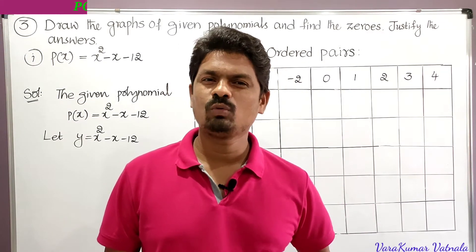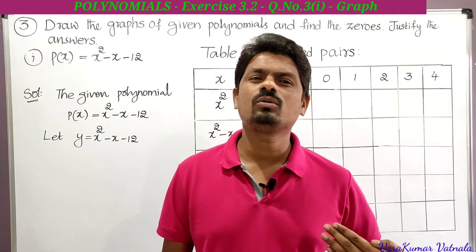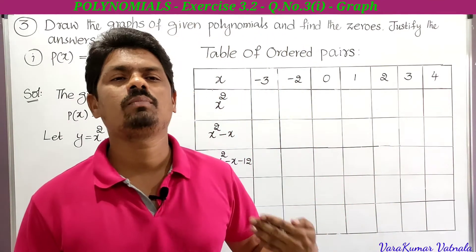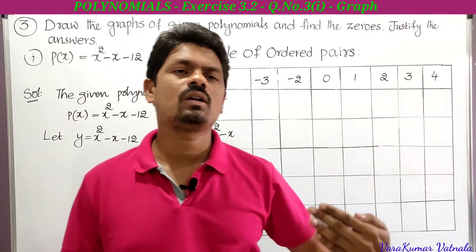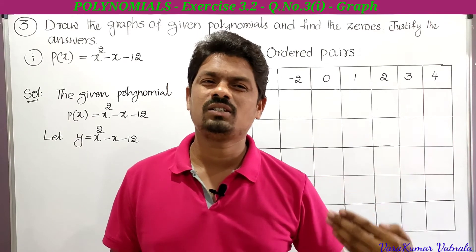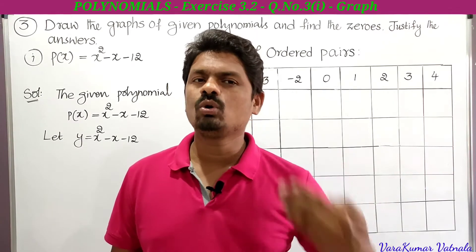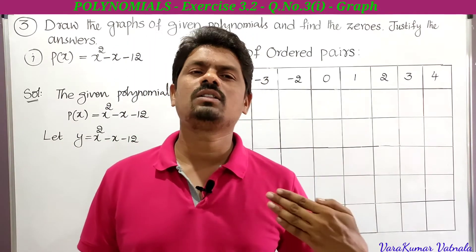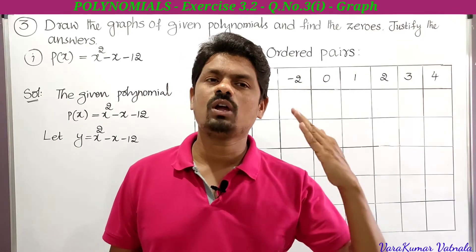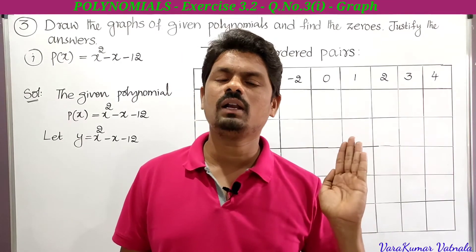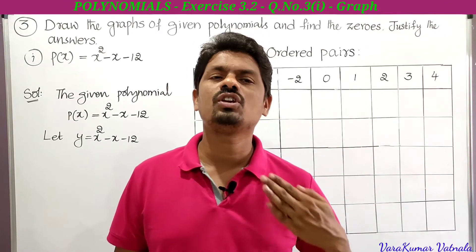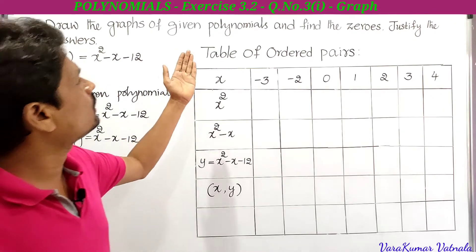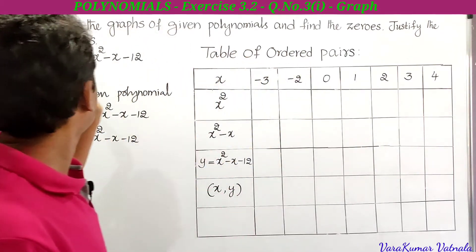Hi, hello, welcome to my channel Learn More Maths. My name is Varakumar. Today we are going to draw the graph of a quadratic polynomial — very, very important. Every time it is asked for four marks in the public examination. So definitely you can get marks from this area. This is the third problem from exercise 3.2. We need to draw the graph of a given quadratic polynomial and find the zeros of the quadratic polynomial from the graph, and justify the answers.